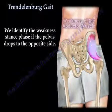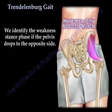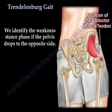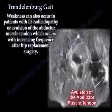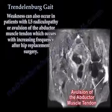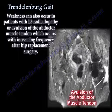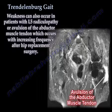We identify weakness during the stance phase if the pelvis drops to the opposite side. Here you can see an example of weakness of the abductor muscle as well as avulsion of the abductor muscle tendon. Weakness can also occur in patients with L5 radiculopathy or avulsion of the abductor muscle tendon, which occurs with increasing frequency after hip replacement surgery.